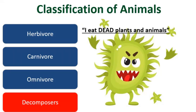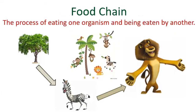Based on their eating habits, animals can be grouped into herbivore, carnivore, omnivore, or a decomposer. We can say that animals are dependent on plants for their food, directly or indirectly.